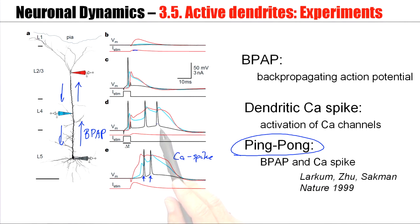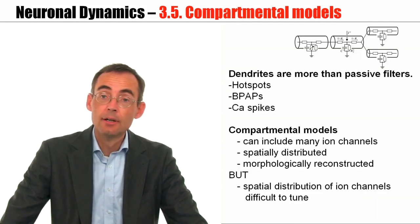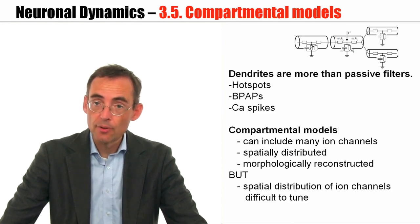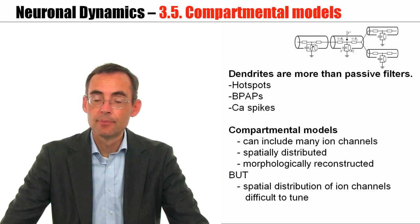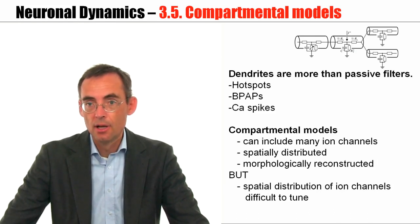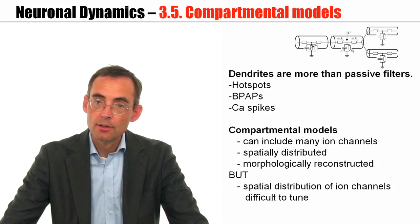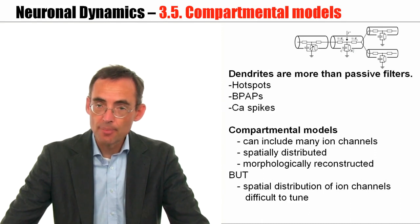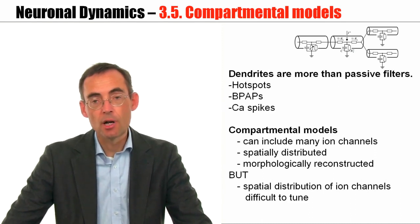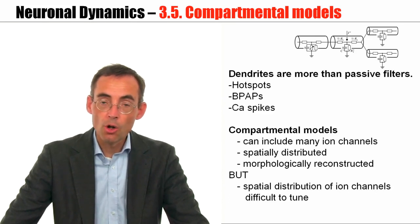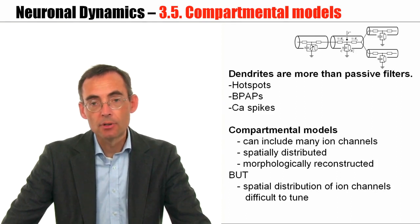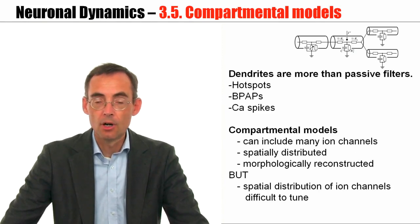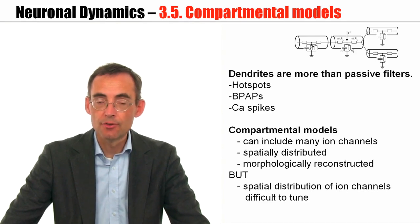In summary, dendrites are not just passive, they have active properties. They have calcium currents that can generate calcium spikes that are visible as a large voltage transient. Active dendrites permit back-propagating action potentials so that if an action potential is generated at a soma, the information about the action potential is available all over the dendrite. Compartmental models can model all these different aspects of active dendrites. However, compartmental models are difficult to tune because you often don't know where along the dendrite, where to put the different ion channels at which density.